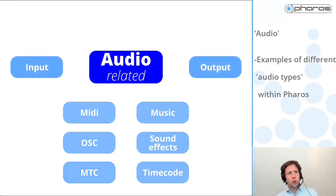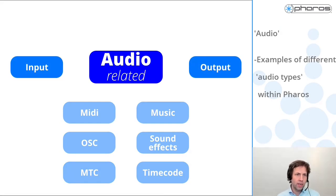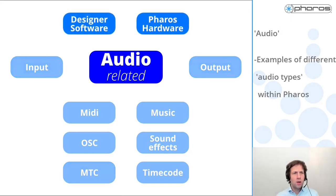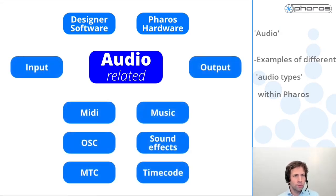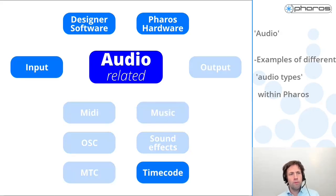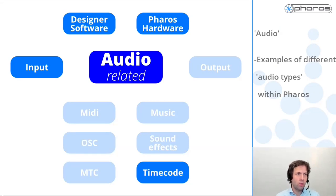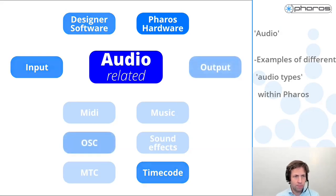When talking about audio, there's also of course the difference between input and output of a system. Working with Pharos, we need to figure out: do people want to do something with audio in the designer software, or do they want to do something from the Pharos hardware? If people want to use timecode to program a show against output, we are talking about getting timecode into the system - setting it up from the designer and running it from the hardware. This is a valid request that we can meet.